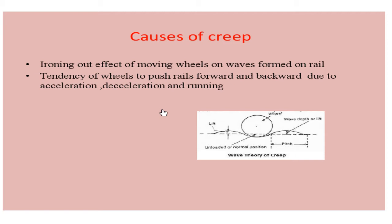The percussion theory states that creep is formed due to the impact of the wheel at the rail end ahead at the joints. At the joint, you will have a trailing rail and a facing rail — the trailing rail is the rail left behind, and the facing rail is the rail on which the wheel is going to move. At this joint, it pushes the rail forward, which results in creep.